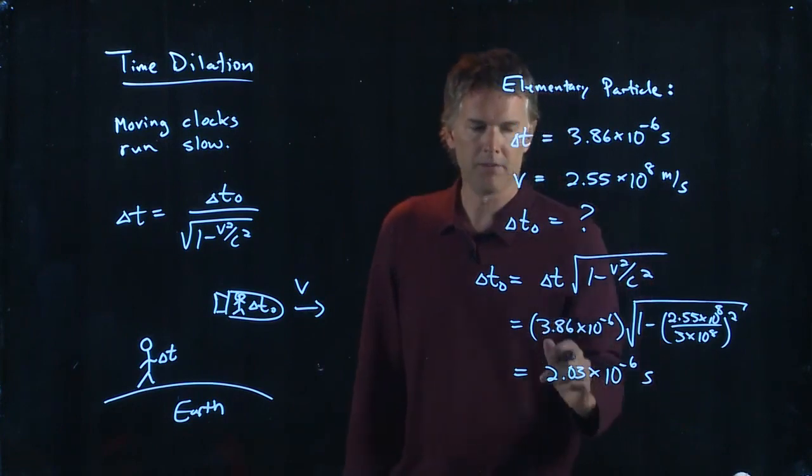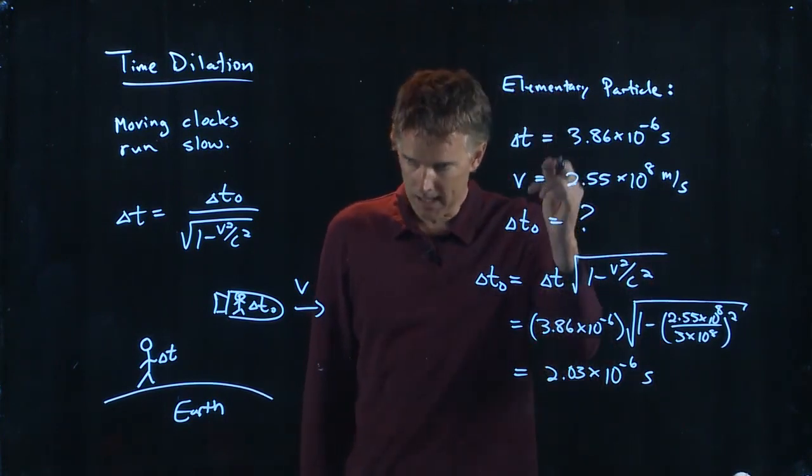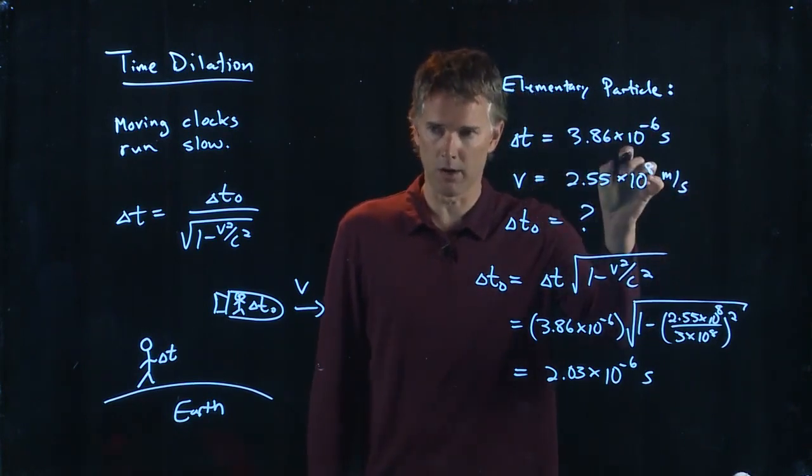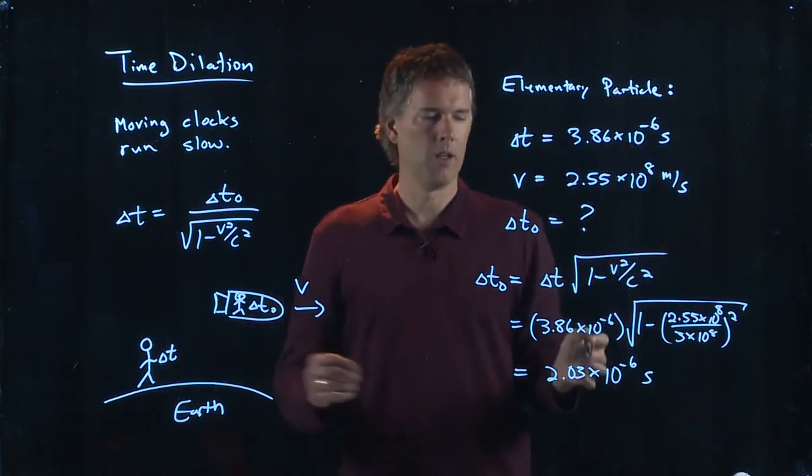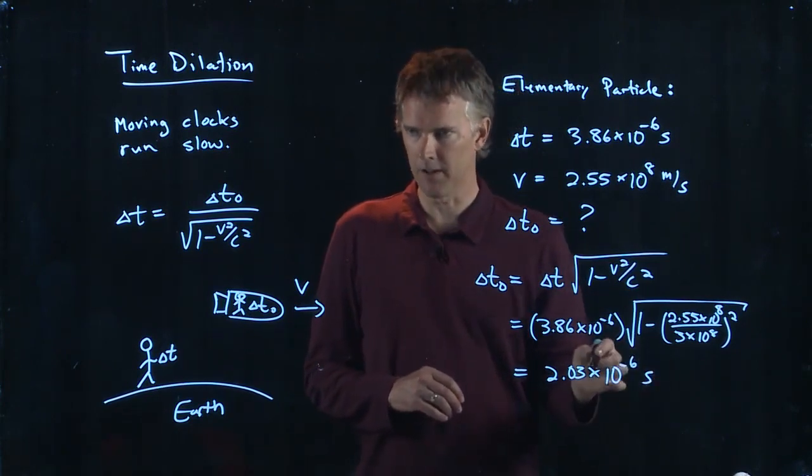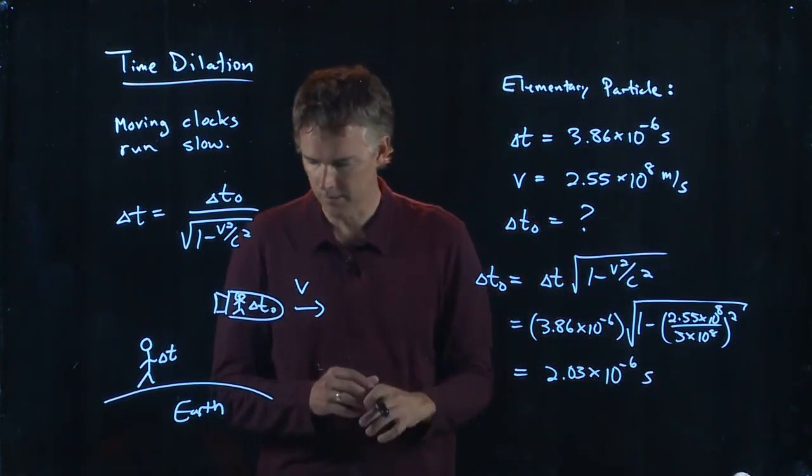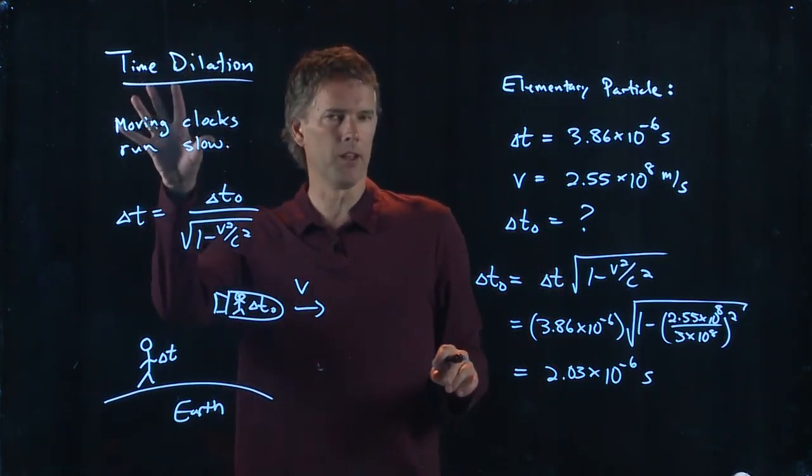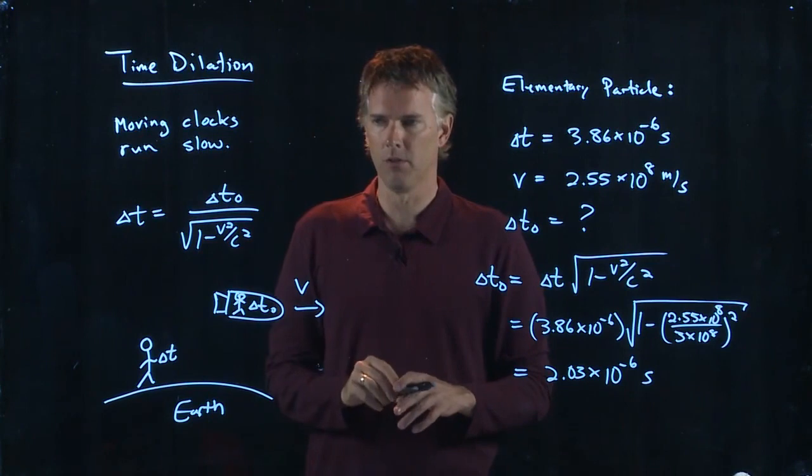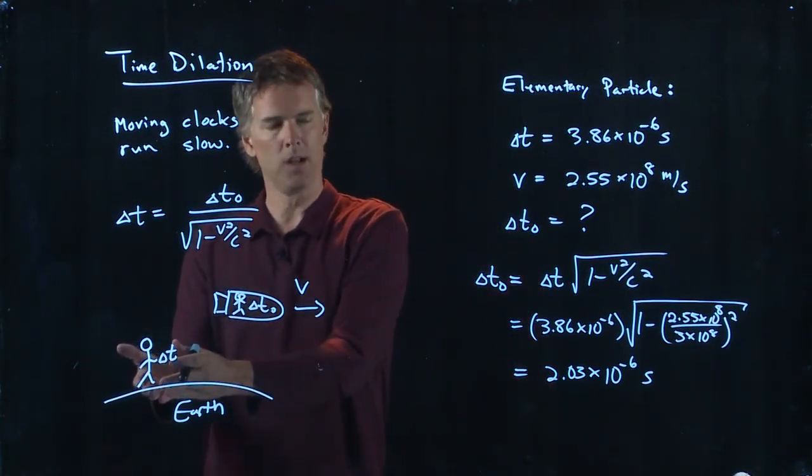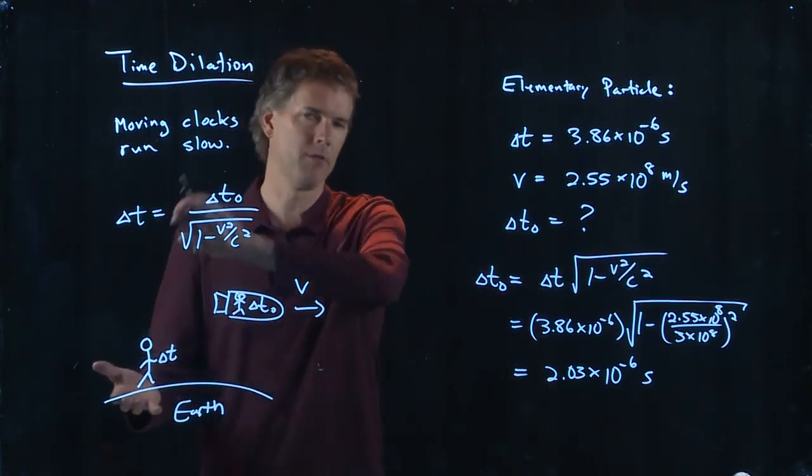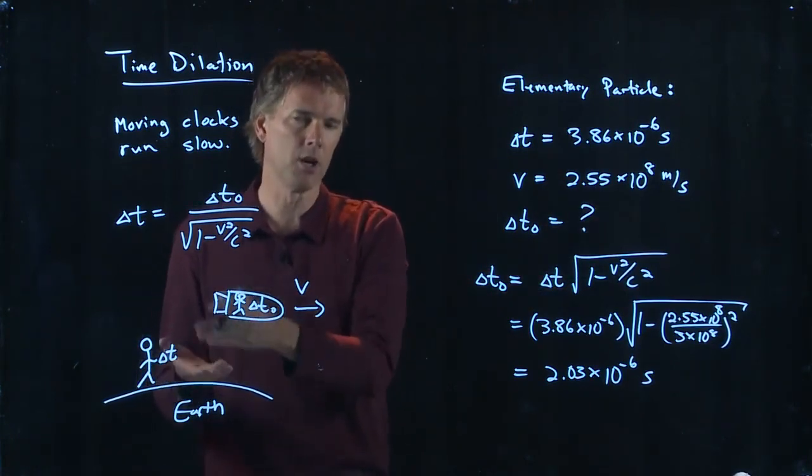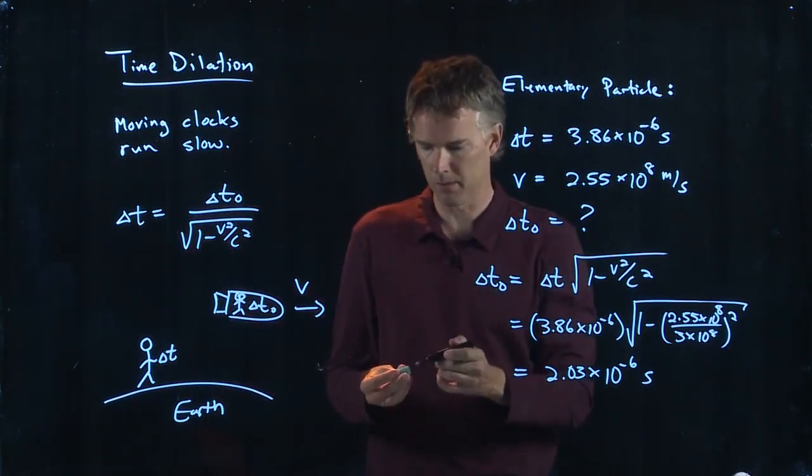So this is something called time dilation. The particle looks like it lives longer as measured by you than it does as measured by itself. This is the nature of time dilation. In class we talked about the weird implications of this, particularly with regards to the twin paradox. You put two twins on Earth, put one of them in a spaceship, fly them around for a long time. When they come back, they are younger than the other twin, and that's really what happens.